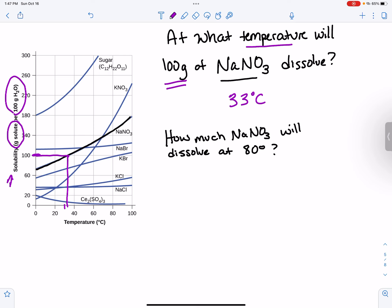And then the next one is, how much NaNO3 will dissolve at 80 degrees? So I'm just doing it oppositely. I'm taking my 80 and going up until I hit that line. And then I'm going to go across right there.